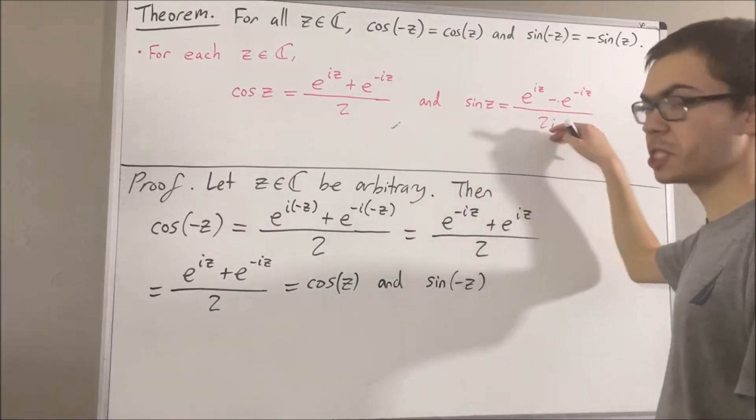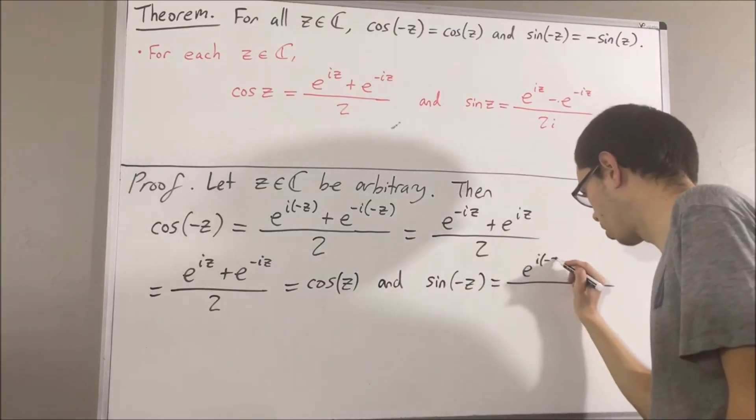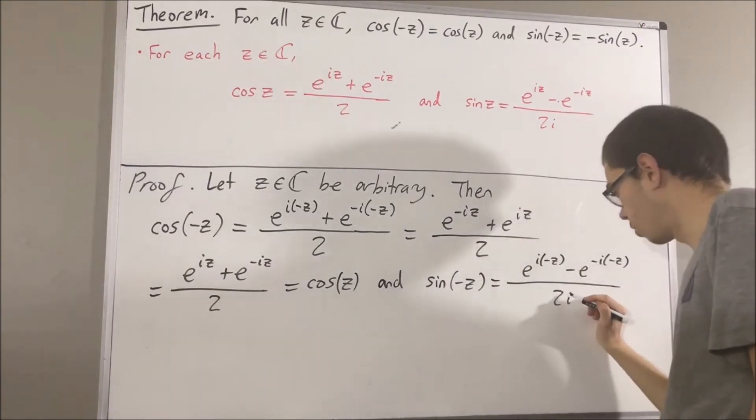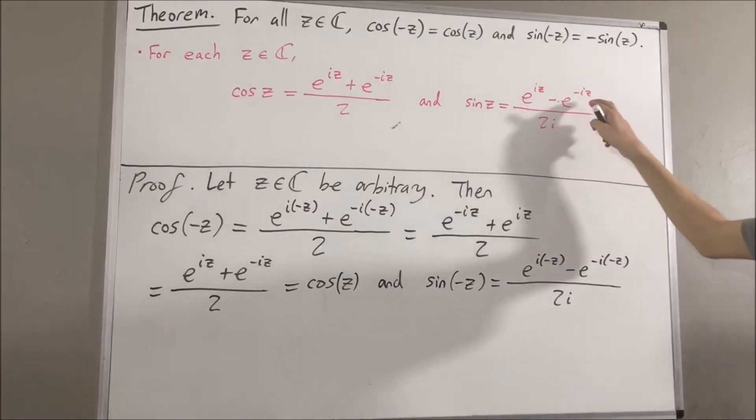By definition, the sine of negative z is e to the i times negative z minus e to the negative i times negative z over 2i. All we've done here is substitute negative z for z.